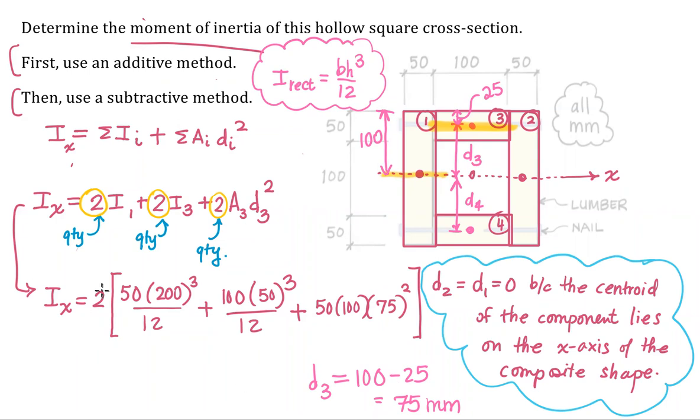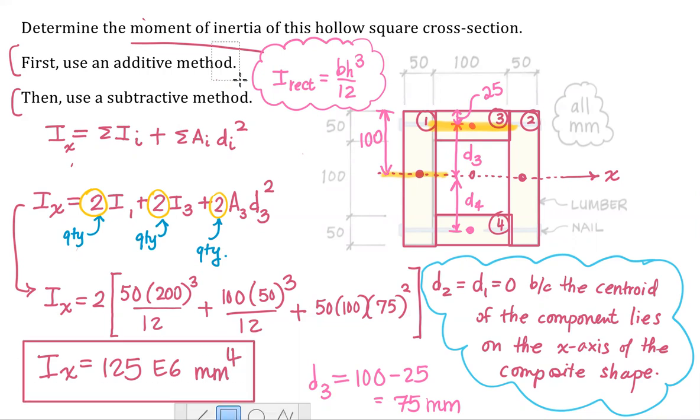All of these units are in millimeters. We should get millimeters to the fourth out of this. Using engineering notation. That's 125 E6 millimeters to the fourth. That's the centroidal moment of inertia about x using an additive method. We basically had to compute one, two, three nonzero terms.